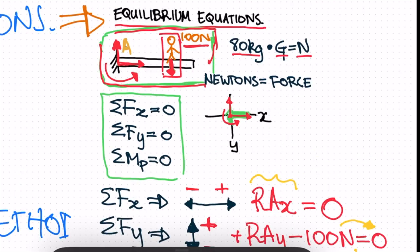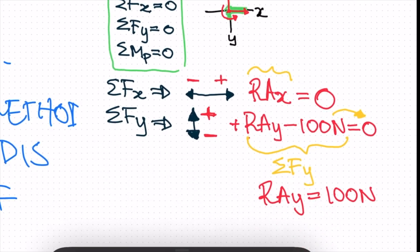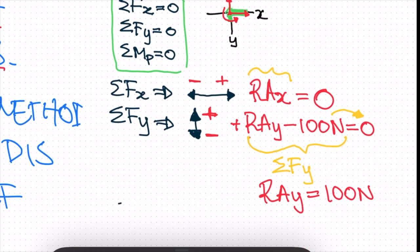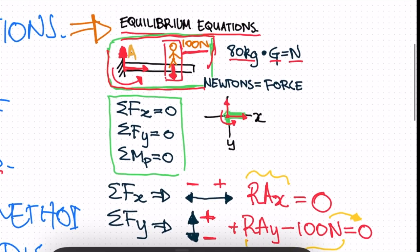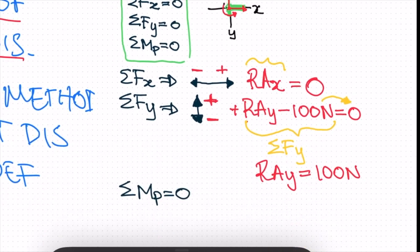We move the 100 newtons to the other side and find that RAY is equal to 100 newtons. The reaction going up equals 100 newtons, which balances the 100 newtons acting downward. Our final equilibrium equation is the sum of moments about a point equals zero. We can choose any point that has a reaction — our point is point A.